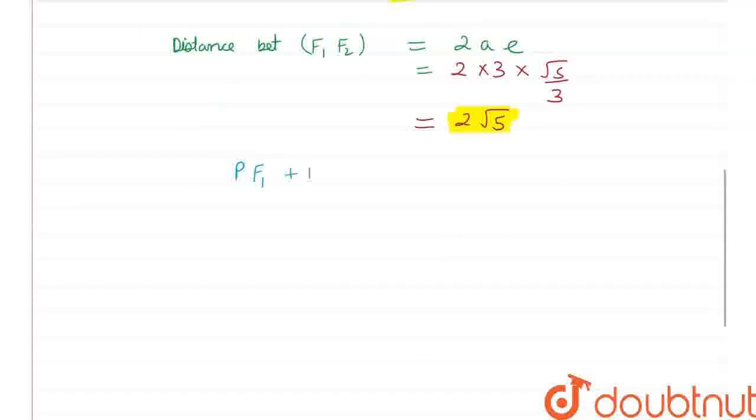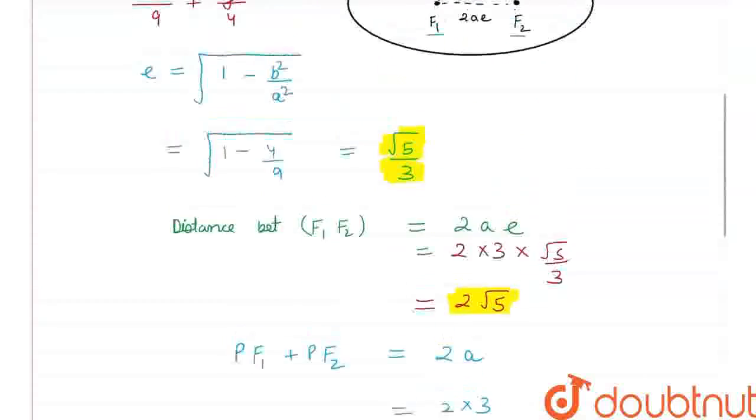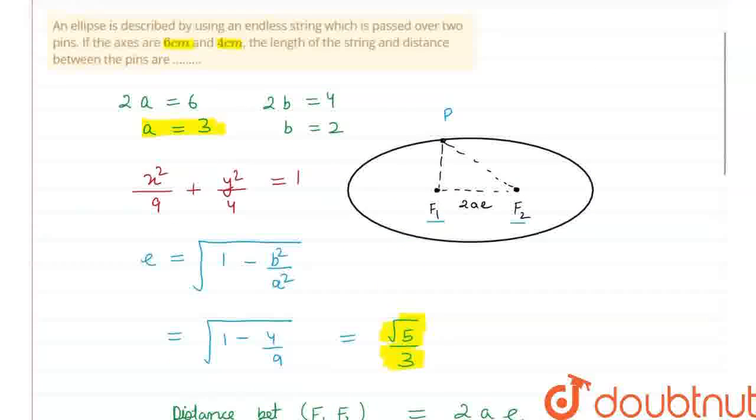pf1 plus pf2. And we already know that this sum is equal to 2 times a and we know that a is equal to 3. Therefore, my answer would be 2 into 3 is equal to 6. Therefore, 6 units is equal to the length of the string that makes this ellipse while passing through these two pins.